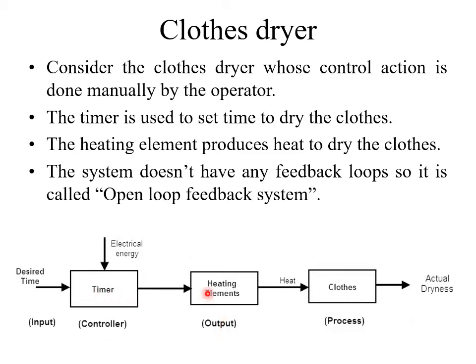Since it is an open loop system, it does not have any feedback. We can, however, make this open loop system into a closed loop system by placing a sensor to sense the actual dryness of the clothes and give that feedback to the controller — the timer — so that the timer operates the heating element based on the actual dryness. But here we are treating it only as an open loop system.